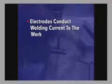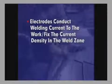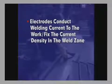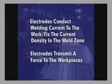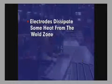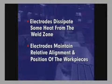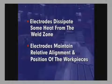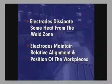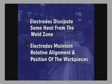Resistance welding processes use copper electrodes. These electrodes perform four functions: they conduct the welding current to the work and in some cases fix the current density in the weld zone; they transmit a force to the work pieces; they dissipate some heat from the weld zone; and they maintain relative alignment and position of the work pieces in some resistance welding operations. Very high electric currents are used to quickly produce the resistance heat necessary for fusion.